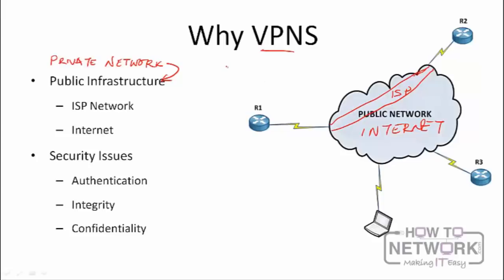You may have heard of GRE tunnels — GRE stands for Generic Router Encapsulation. It's a tunnel created between two endpoints that makes two devices on a common public network seem like they're directly connected. With a GRE tunnel between R1 and R2, they can share an IP network like 192.168.1.0, with R1 as dot 1 and R2 as dot 2. However, GRE tunnels on their own are very insecure — there's no authentication, no data integrity, and no confidentiality.